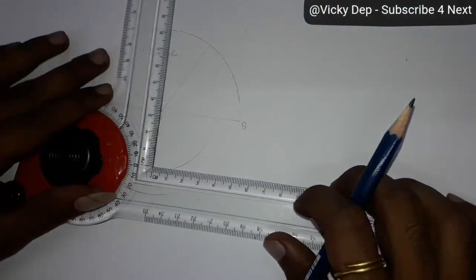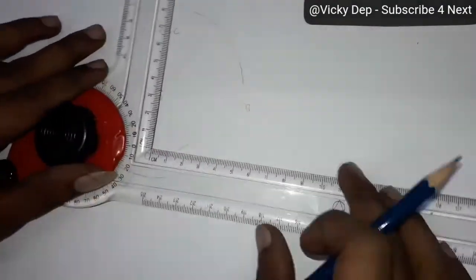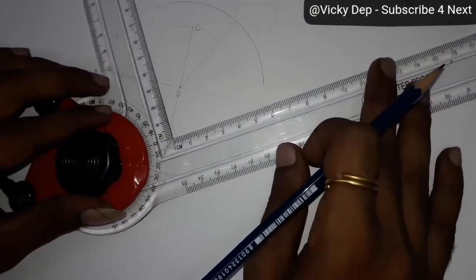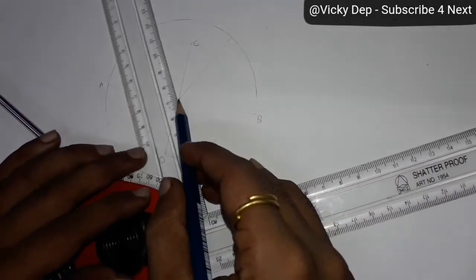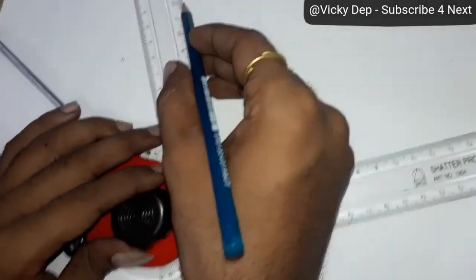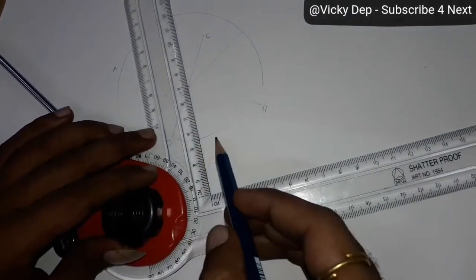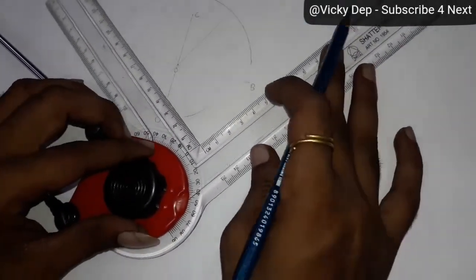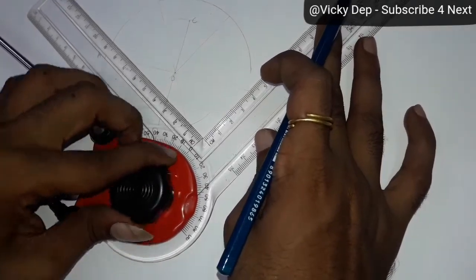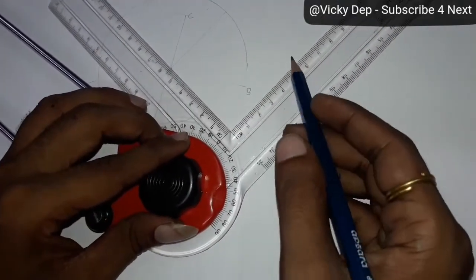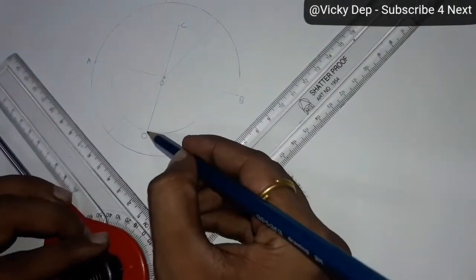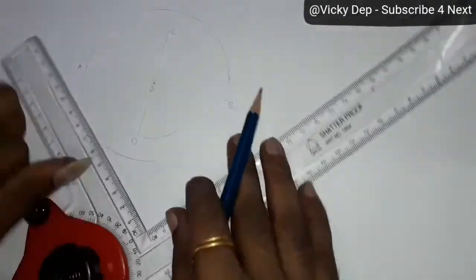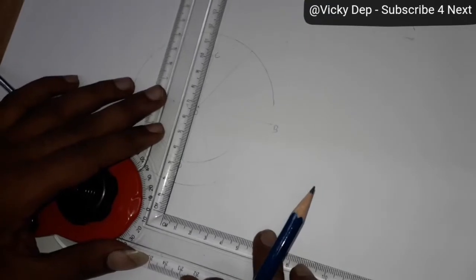Now, this is vertical now, you have to make 30 degree for this vertical one. Like this. And make 60 degree again. For vertical scale. And extend this D and C. So you will get 12 parts.